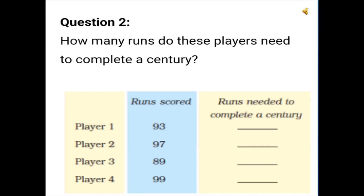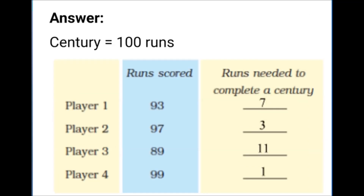Player 2 has scored 97 runs. How many more does he need? He needs just 3 more runs. 97 plus 3 is equal to 100. Player 3 has scored 89 runs. Oh, he needs to score a lot more runs to reach his century. 100 minus 89 is equal to 11 runs. He needs 11 more runs to score a century.